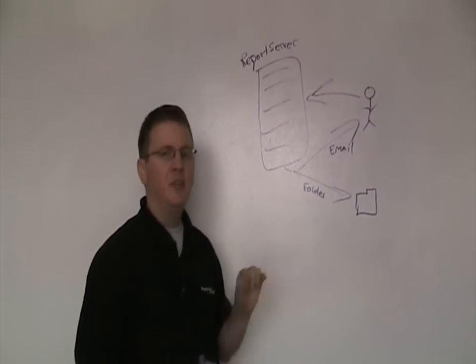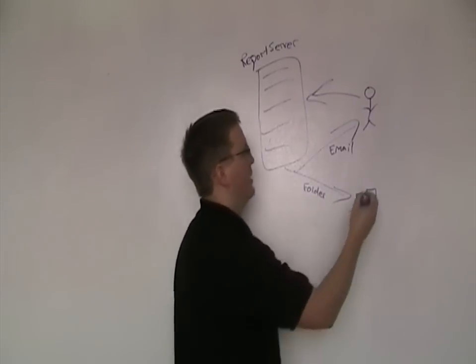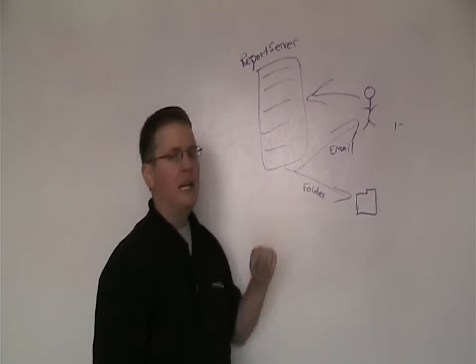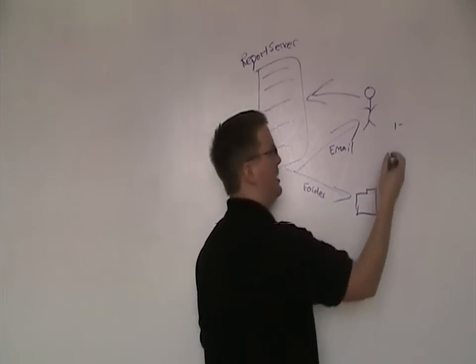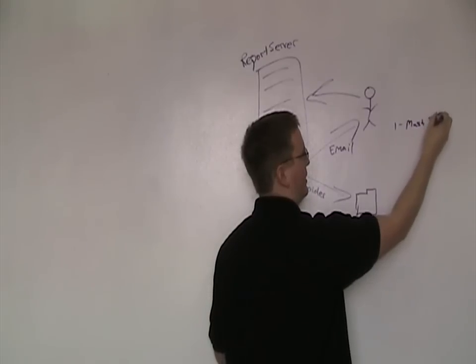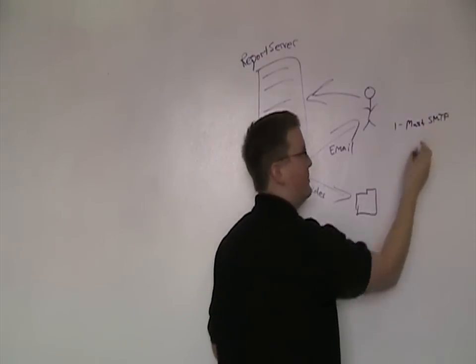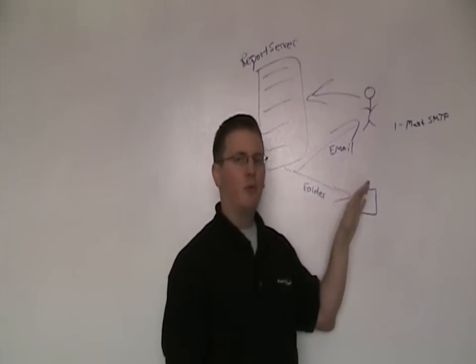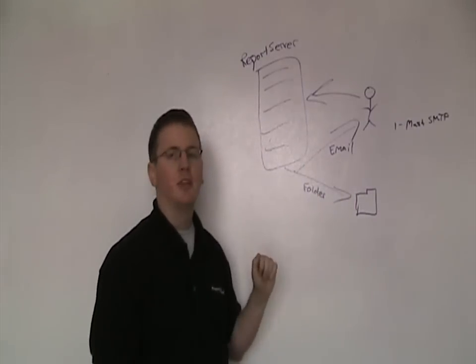Now, there's several caveats to using subscriptions. The first one I'll write out here. The first one is going to be if you're using email. So if you're using email, you must set up SMTP. The SMTP server, your email server, must be set up on the report server configuration to be able to use the email method.